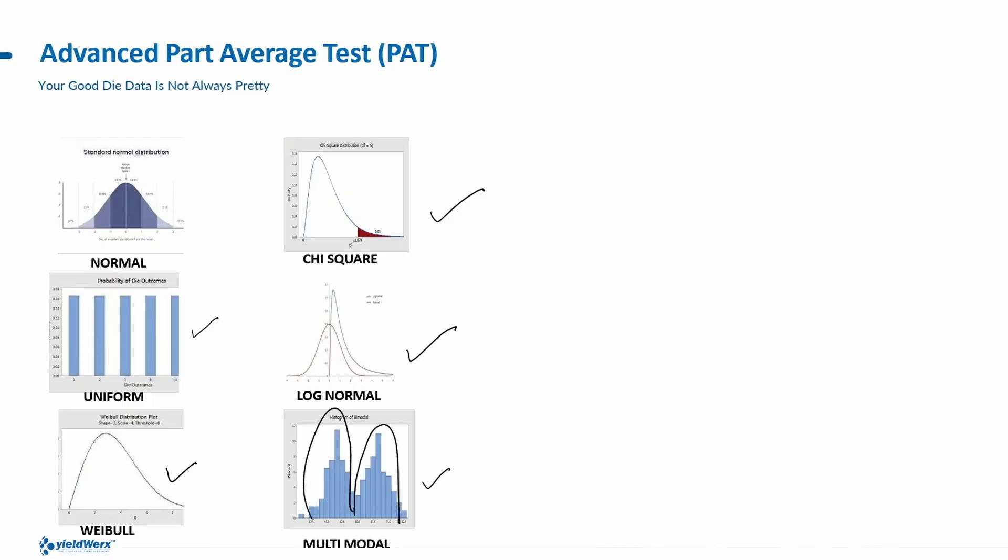If I go to the next slide, this is typically what we would see in terms of signatures. You could have uniform data, you could have a Weibull signature, you could have a chi-squared signature, you'd have log-normal signatures, and in the example I just drew on the previous slide, I could have multimodal signatures as well, where my die on the actual wafer exhibit two different curves over here. Now, when I first started explaining part-average test, I said the traditional method was looking at a standard distribution over here. But this standard distribution over here really masks the problem.